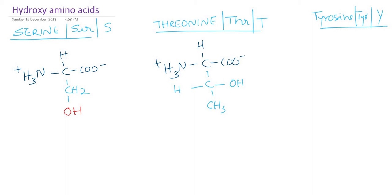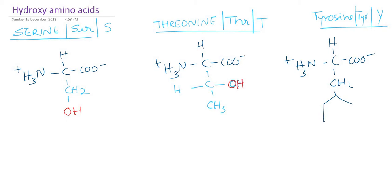Let me color the OH group in red. Now for tyrosine, which we already know: it has a carboxylate group, an amino group, a hydrogen, and a CH₂ group connected to a benzene ring. There is a double bond in the ring, and the benzene ring also contains a hydroxyl group. These are the structures of the three amino acids: serine, threonine, and tyrosine.